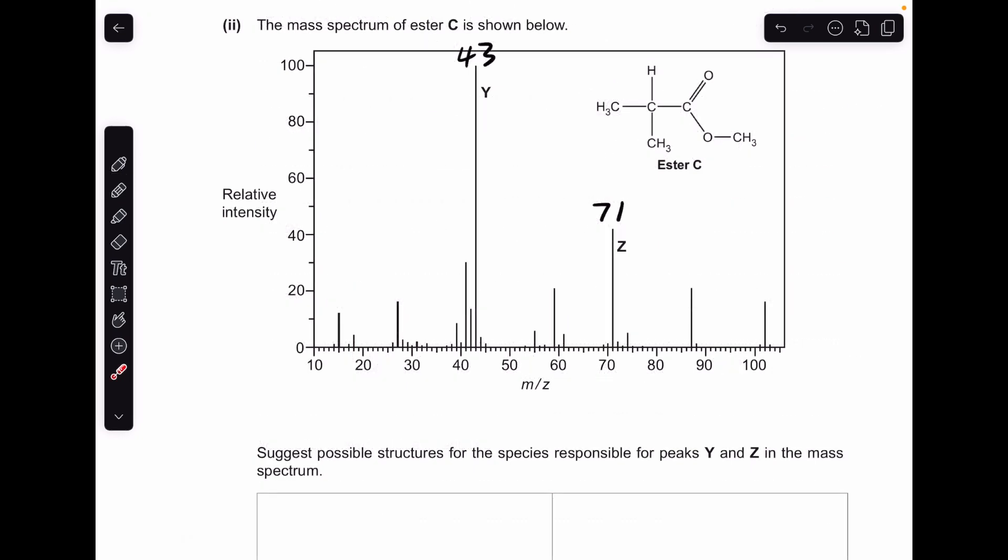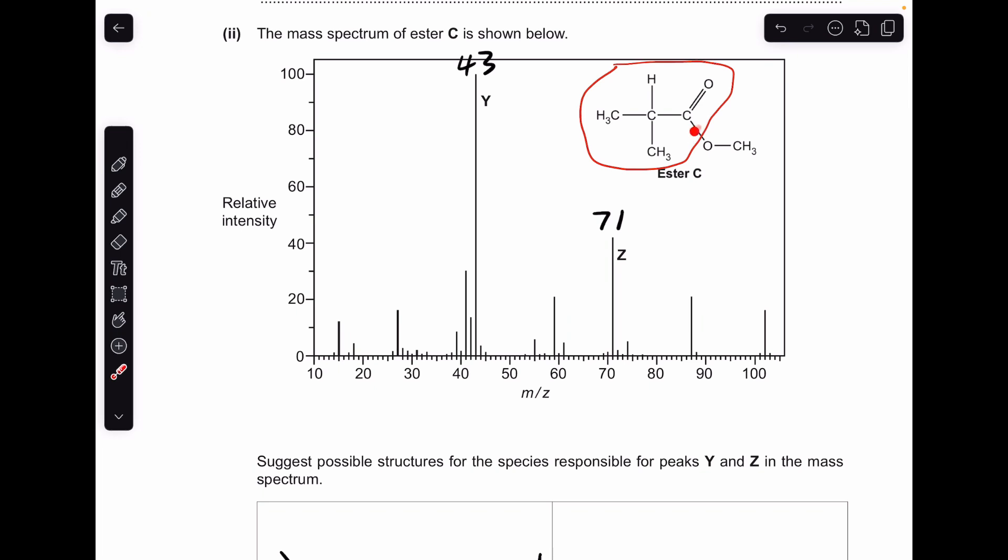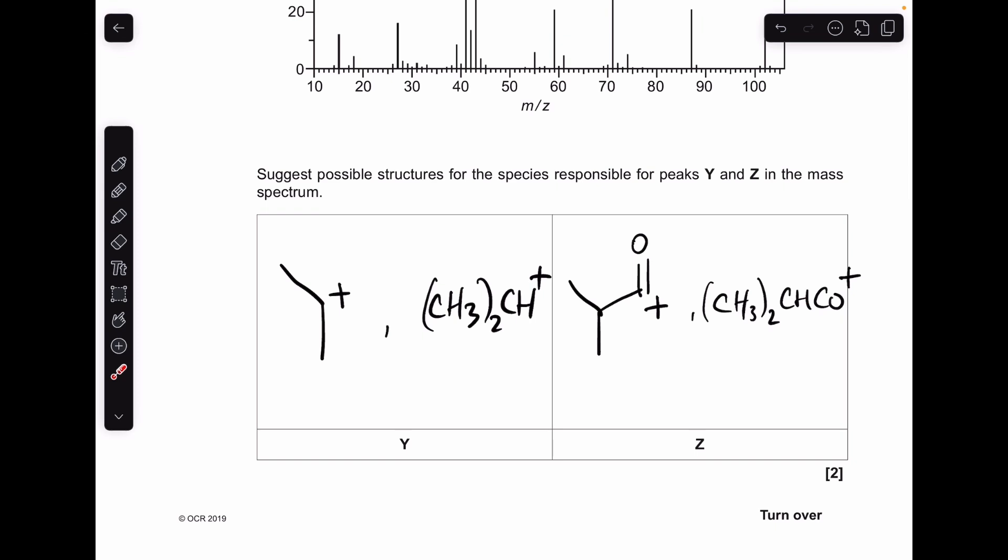And finally, these possible structures for the species that have caused the fragment peaks at Y and Z. You'll notice I've worked out the M over Z values. We've got 43 for Y and 71 for Z. Basically, all we've got to do is look at the structure of the ester, break one bond in the full molecule, and try and make the 43 MR and the 71. Starting with the peak Y, 43 M over Z, this bond breaks, and this bit is detected by the mass spectrometer, that adds up to 43. I've given the skeletal formula there, and the structural formula, but whatever you do, don't forget about this positive charge, because you'd lose a mark if you didn't put it on. And then for peak Z at M over Z 71, we need to break this bond here, so this bit will carry the positive charge and be detected. There's the skeletal formula, there's the structural formula for the ion, and don't forget about the charge.